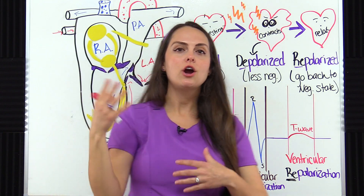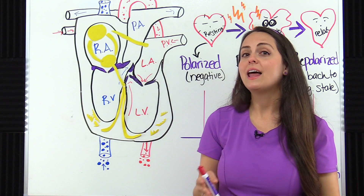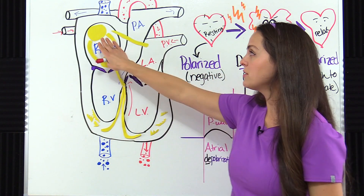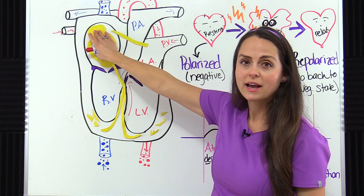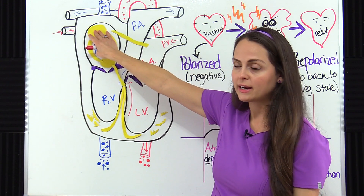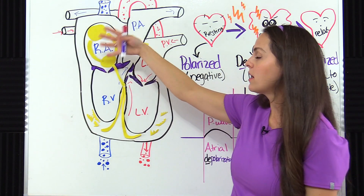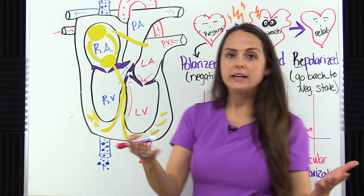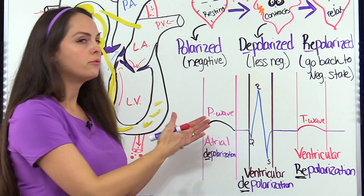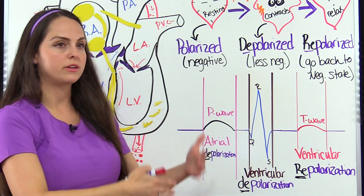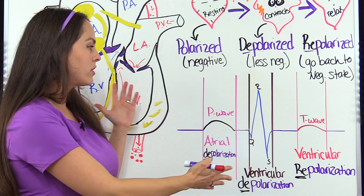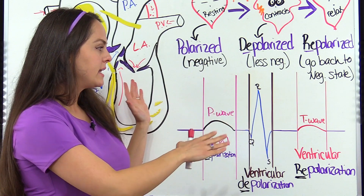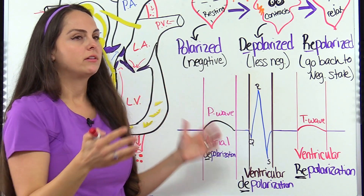So if everything is occurring normally like it should, with everything originating from the SA node and firing the way it should, we should have on our EKG strip a beautiful normal sinus rhythm with all of its parts measuring perfectly and forming perfectly.